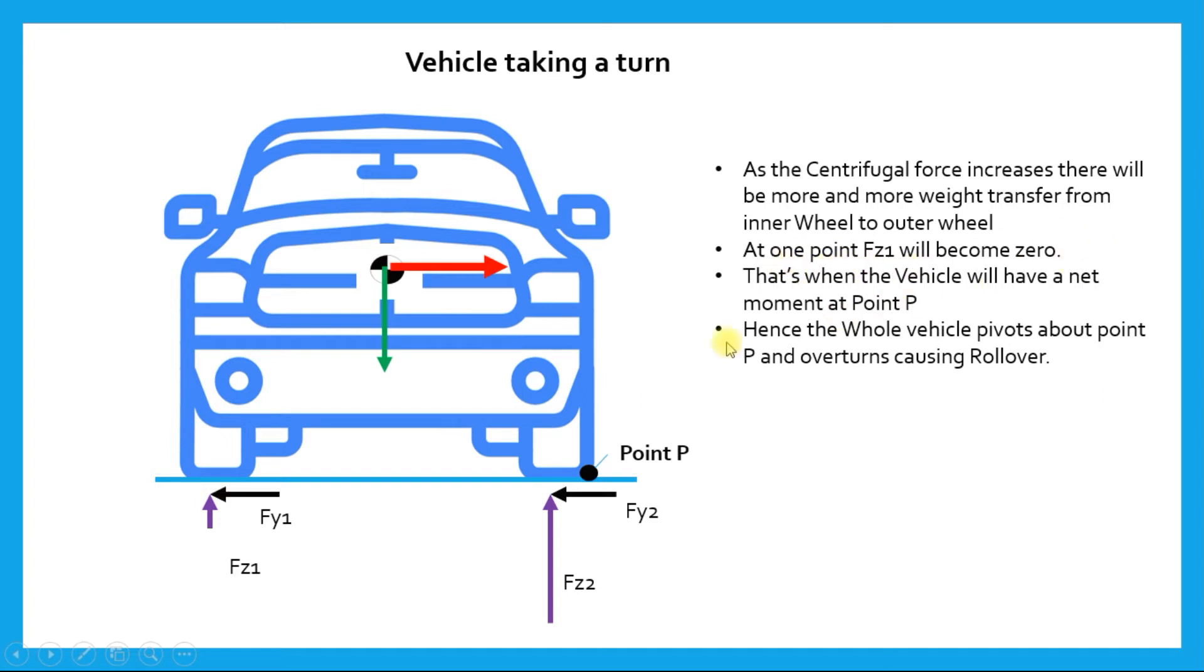So at one point, Fz1 becomes so low and it becomes zero. That's when the vehicle will have a net moment at point P. When Fz1 becomes zero, the whole system is out of equilibrium.